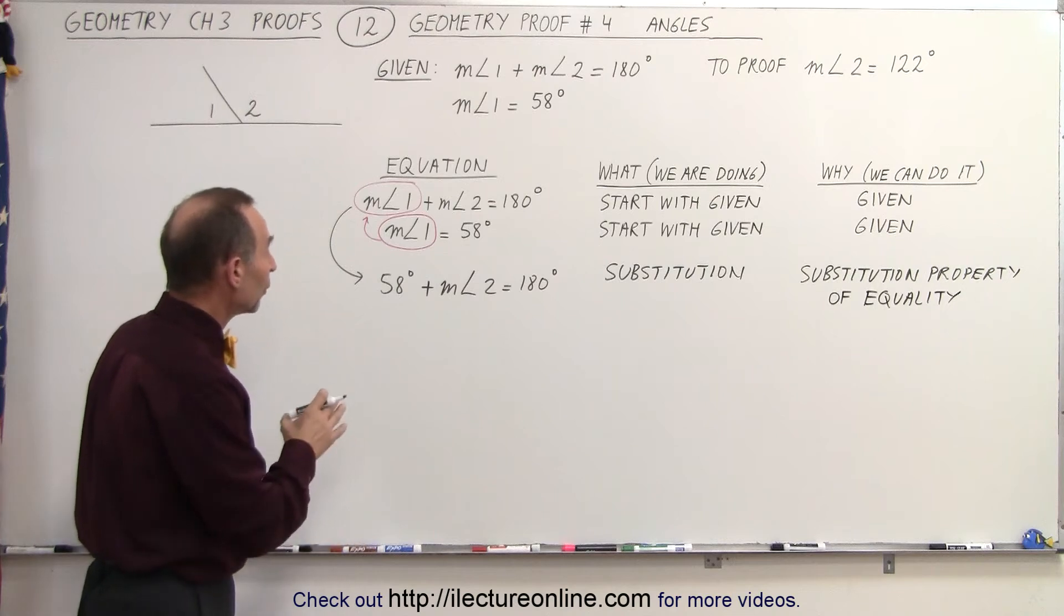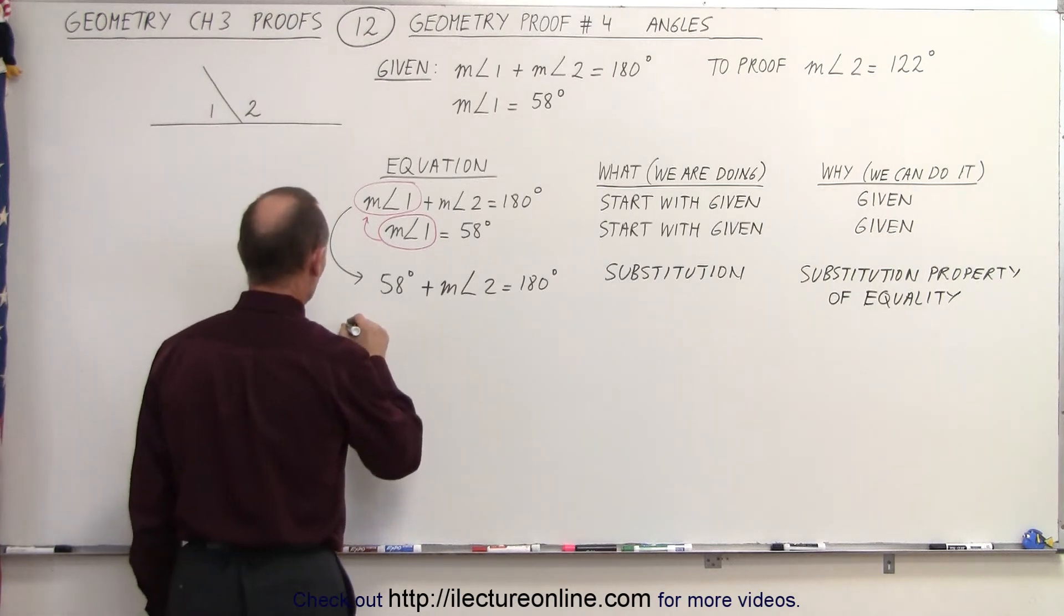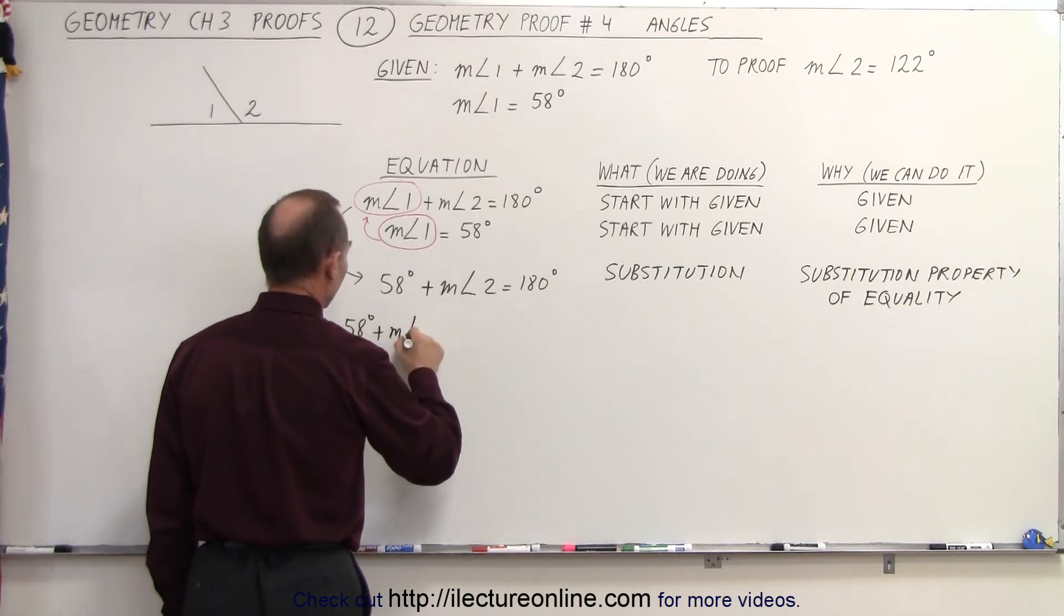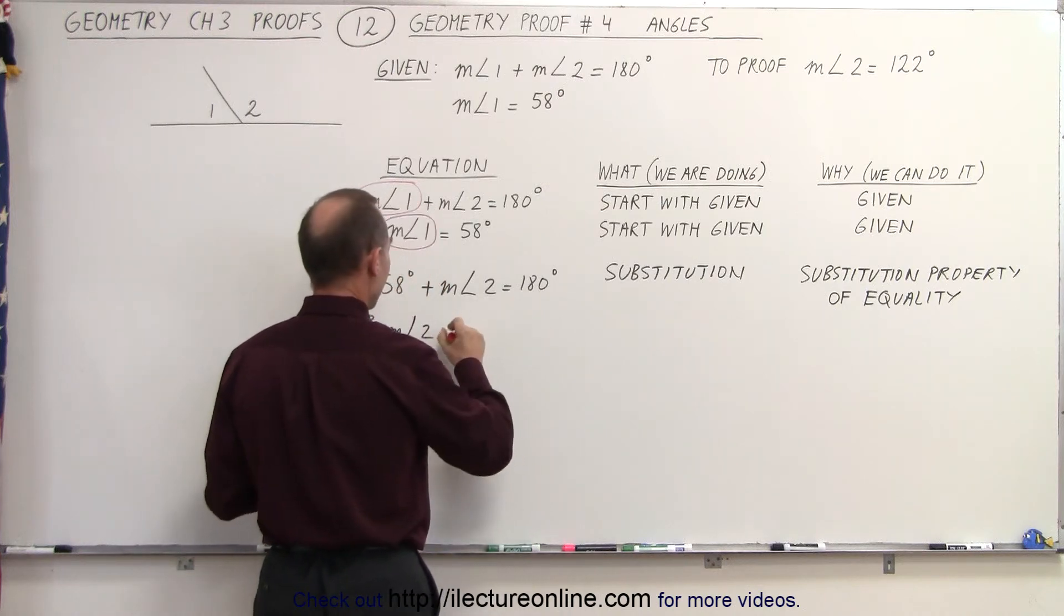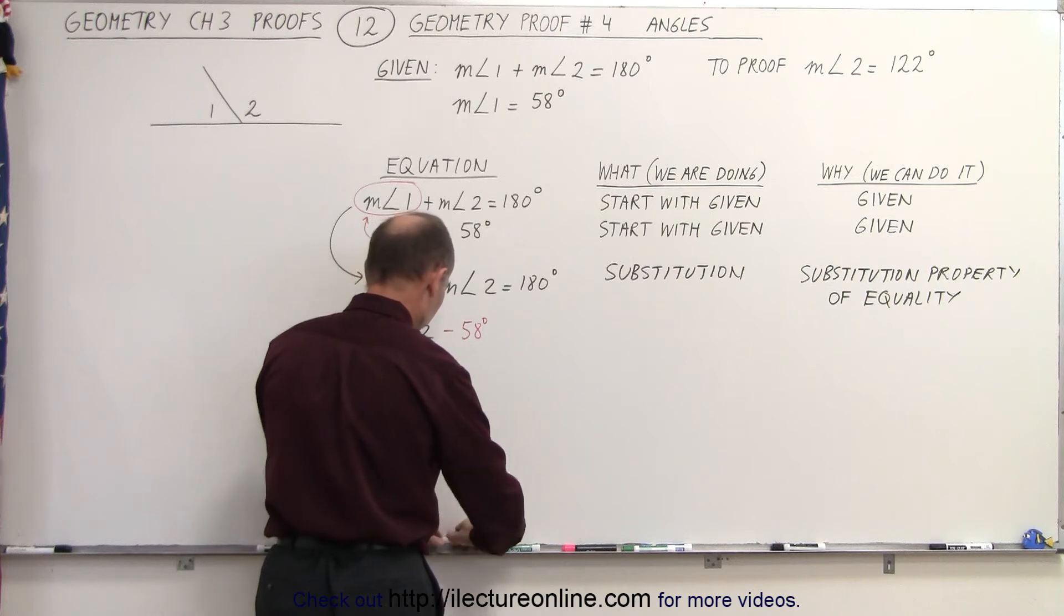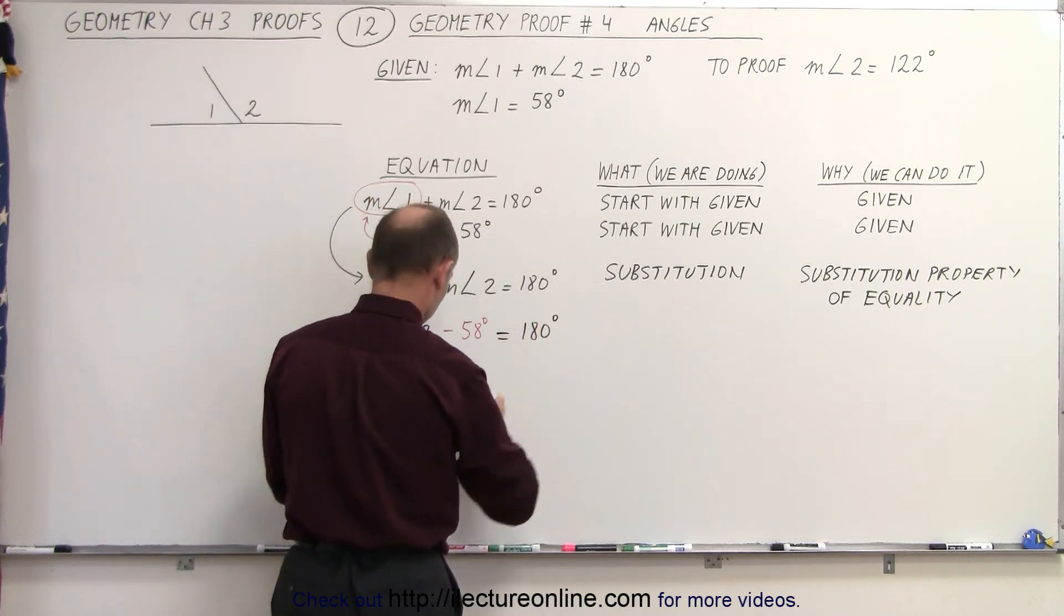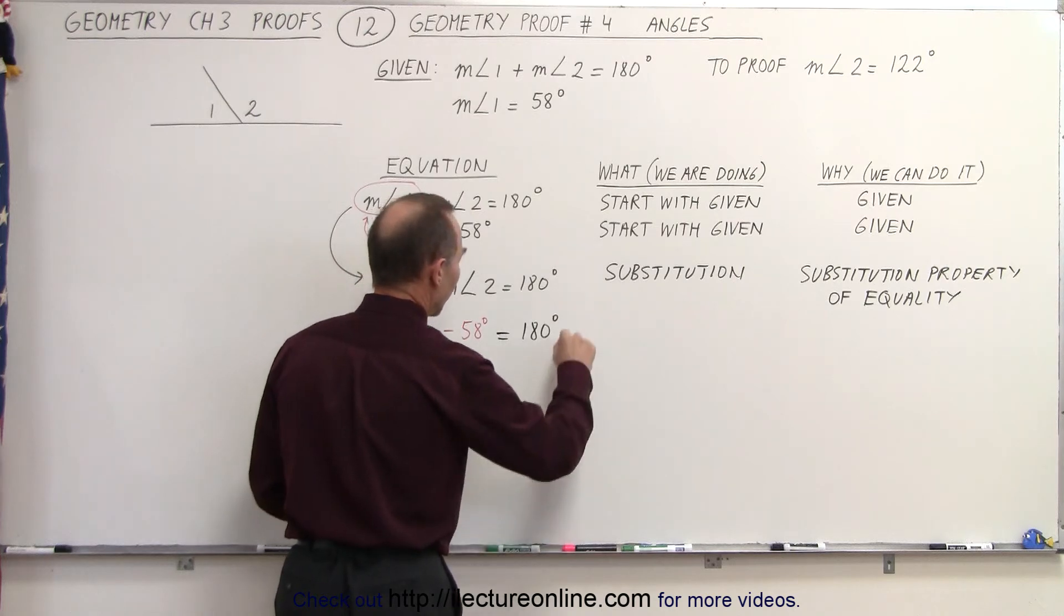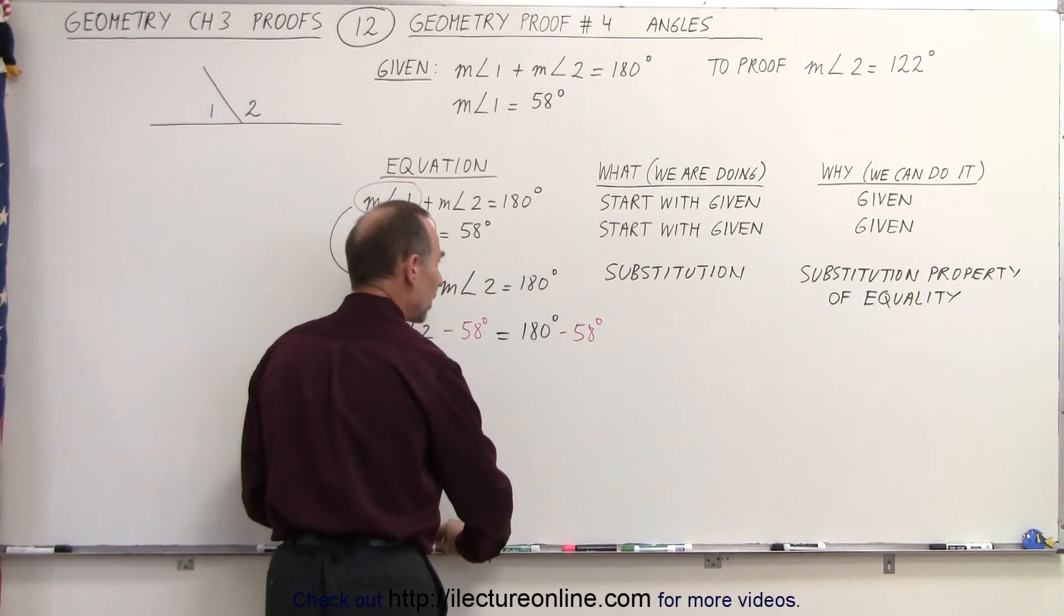Now that we've done that, we're now going to subtract 58 from both sides. So we're going to take 58 degrees plus the measure of angle 2 and we're going to subtract from that 58 degrees. And we're going to do exactly the same thing from the right side, minus 58 degrees. So I am subtracting.